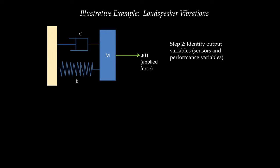Step 2 is to identify the output variables. If I'm analyzing the performance of this loudspeaker, I want to see how much the mass vibrates — specifically, I'd like to see plots of its velocity as a function of time. So I pick y(t), the velocity of the mass, as my output variable. This is a personal choice as a control engineer — you decide which outputs you want to plot and simulate.